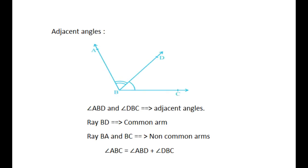Adjacent angles: two angles are adjacent if they have a common vertex, a common arm, and their non-common arms are on different sides of the common arm. See the figure. Angle ABD and angle DBC are adjacent angles. Ray BD is their common arm and point B is their common vertex. Ray BA and Ray BC are non-common arms. Therefore, angle ABC equals angle ABD plus angle DBC.